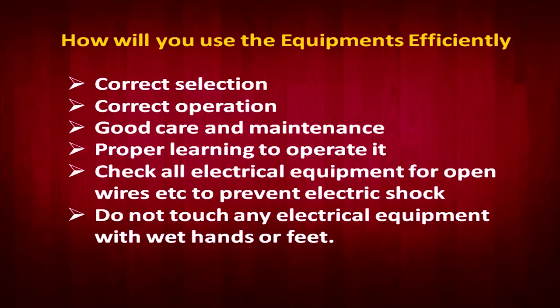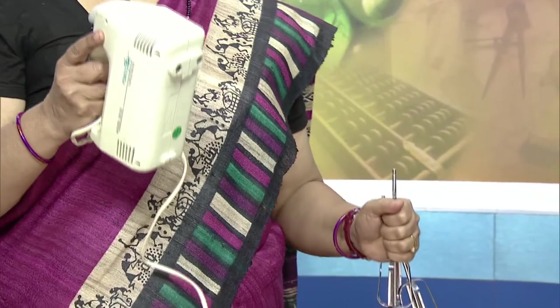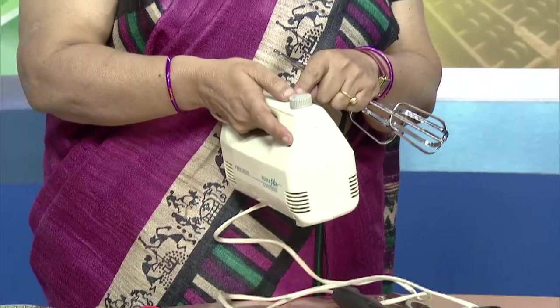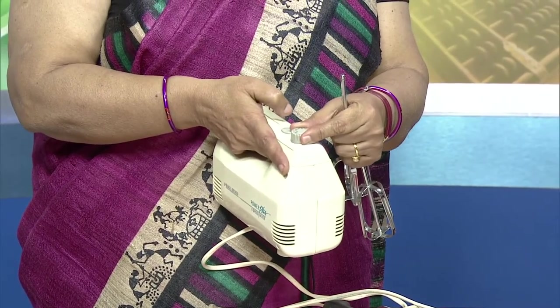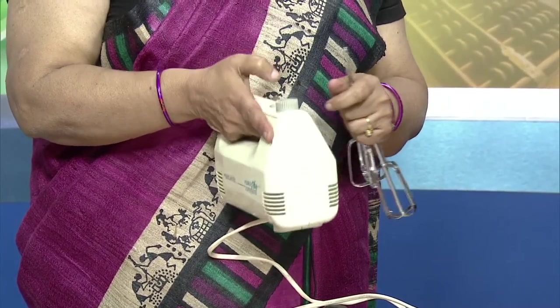We will also learn how to care for and maintain household equipment. Correct selection has already been discussed. The next point is correct operation — you must know how to operate the equipment. For example, this instrument needs to be held and plugged in correctly. Some parts are detachable, and if you do not know how to fix and operate them, the equipment will not be of use. You must know how to change settings and speed before operating it.